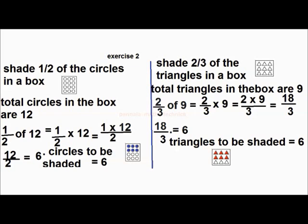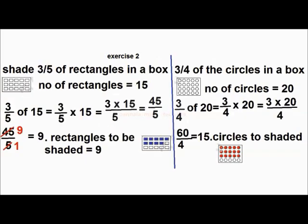Shade 2 thirds of the triangles in a box. Total triangles in the box are 9. 2 thirds of 9 is equal to 2 by 3 into 9, that is 2 into 9 by 3, which is 18 by 3, equal to 6. Triangles to be shaded: 6. Here are some same-type problems — follow them.